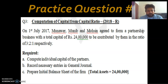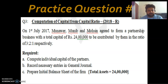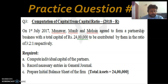On 1 July 2017, Munavar, Muneev, and Mohsen agreed to form a partnership business with a total capital of Rs. 24,00,000, to be contributed in the ratio of 3 to 2 to 1. You are required to compute individual capital, record journal entries, and prepare the balance sheet showing partners' equity and assets.